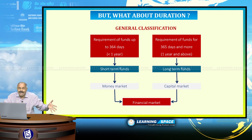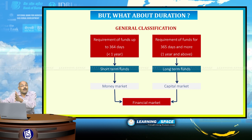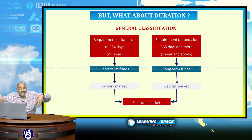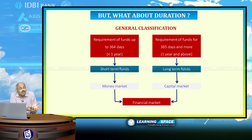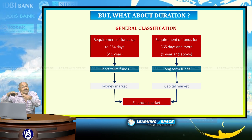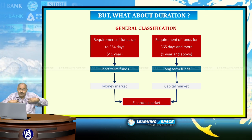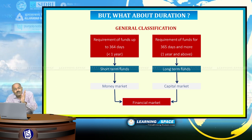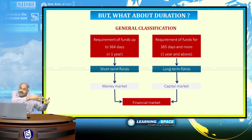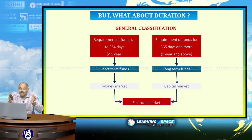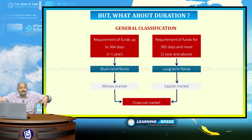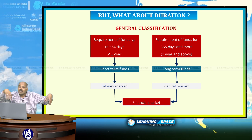In our country there are two distinct categories. One is the money market and the other one is the capital market. When people are exchanging money for less than one year, it is generally termed as the money market. Capital market is long-term money — if you are borrowing for 10 years or 15 years, that is more than one year, it comes under capital market.